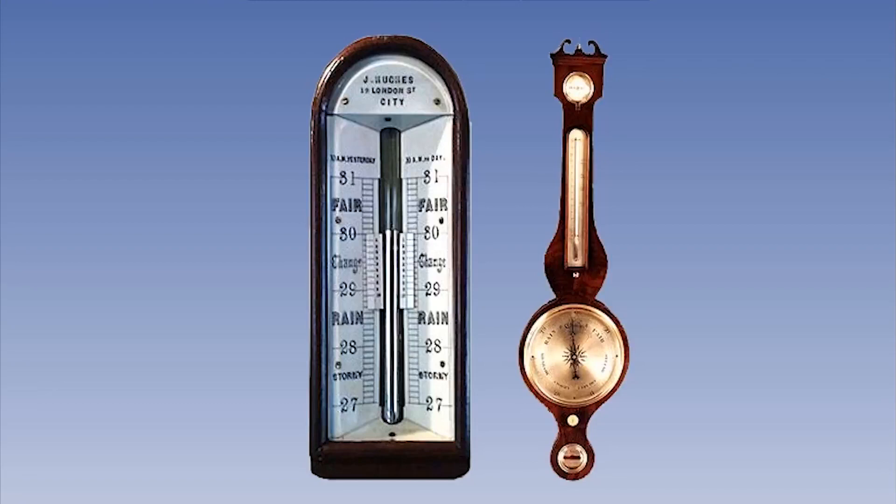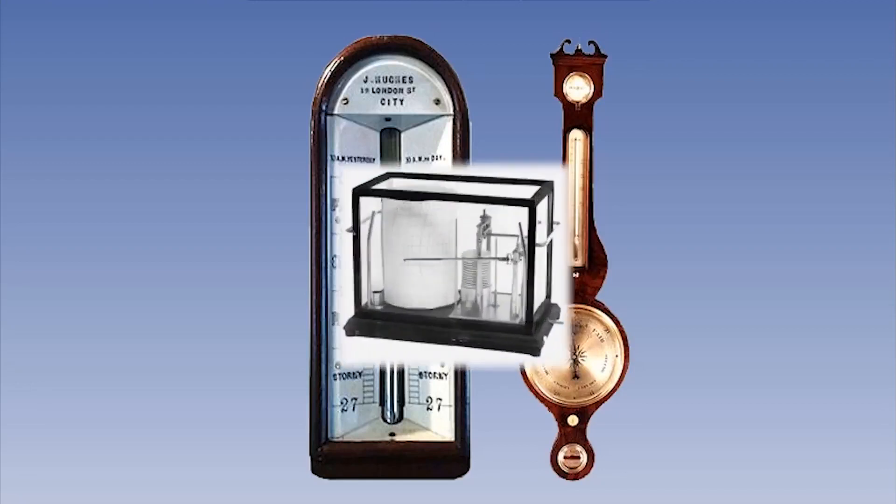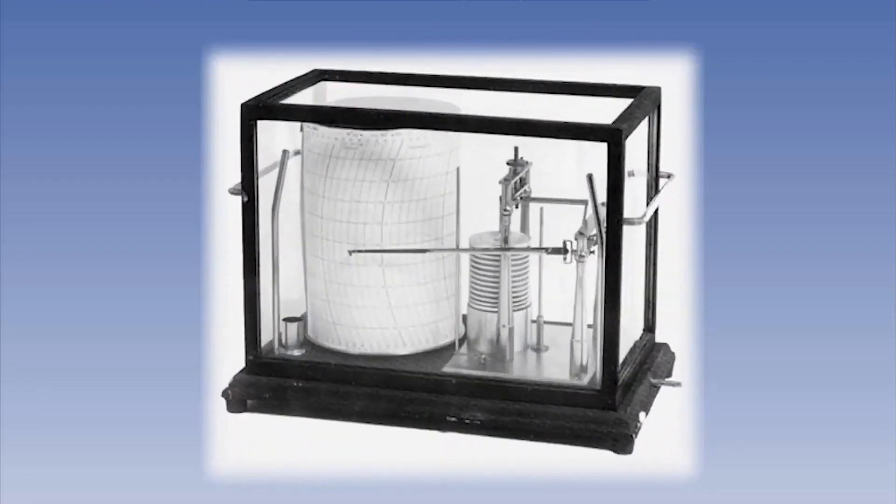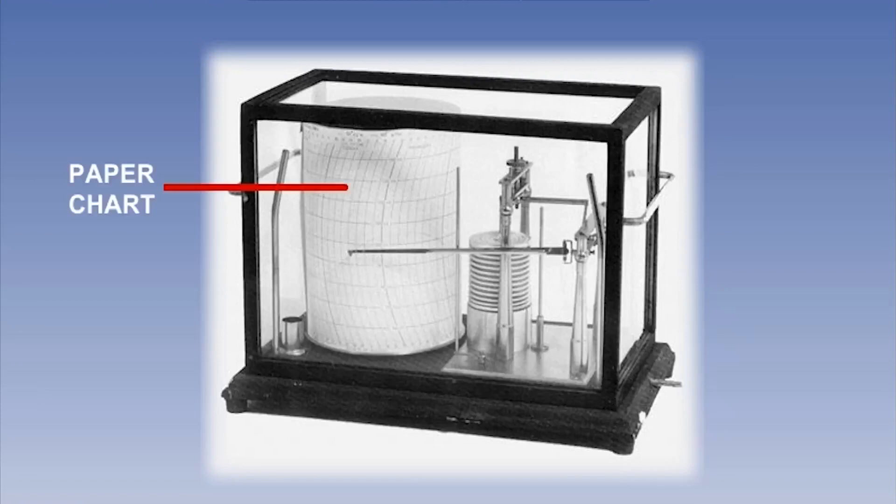Often, a special type of aneroid barometer, called a barograph, is used to record changes in atmospheric pressure over time. A barograph includes a pen that records the air pressure on a paper chart, mounted on a rotating drum.